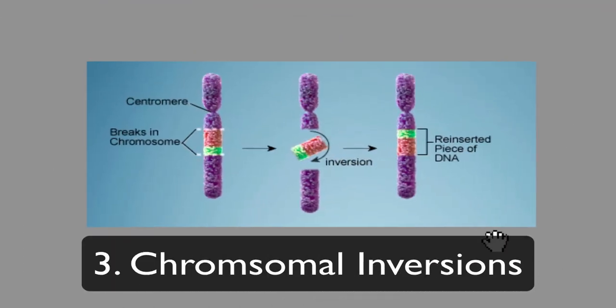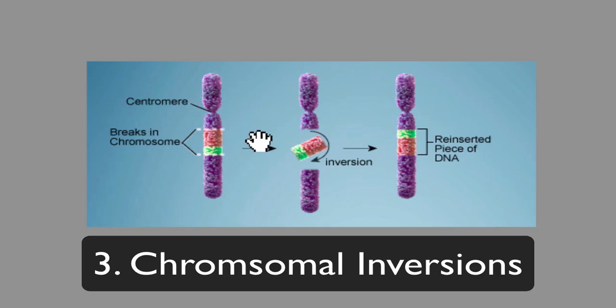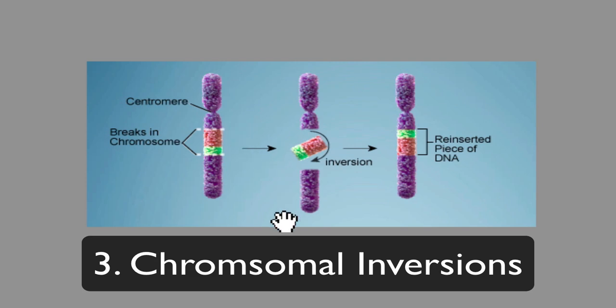Our third chromosomal mutation is the chromosomal inversion. In a chromosomal inversion, the region in question — the pink and the green — is broken out and then inverted, flipped around, so that the orientation in the mutated chromosome is the opposite, or the inversion, of the original.